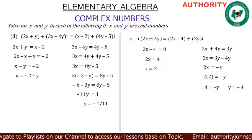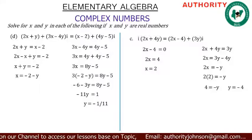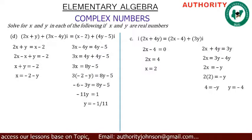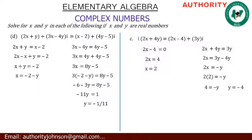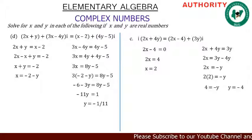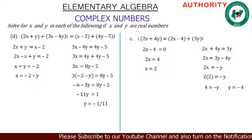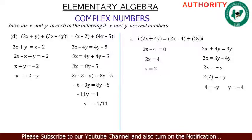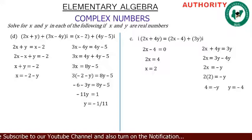Taking 8y to the left and minus 6 to the right: minus 3y minus 8y equals minus 5 plus 6. So minus 11y equals 1. Dividing both sides by minus 11 gives y equals minus 1 over 11.